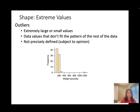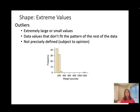Next, extreme values — also called outliers. Outliers are extremely large or extremely small values, or data values that don't fit the pattern of the rest of the data. Outliers are not precisely defined — it's subject to opinion. How far does a data point need to be to be called an outlier? Later we'll learn a formal method, but for now, just keep in mind that extremely large or extremely small values far from the majority are considered outliers.